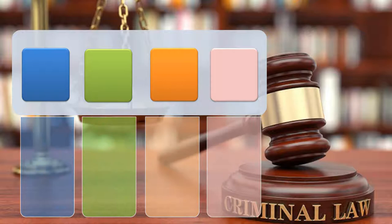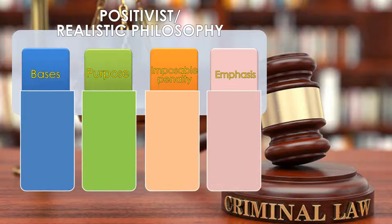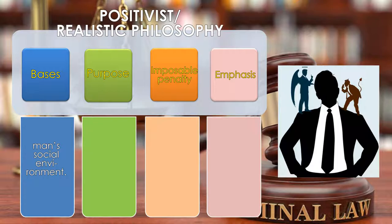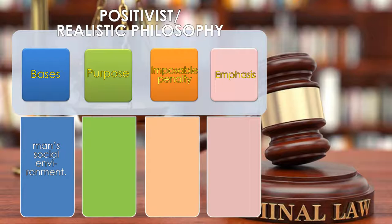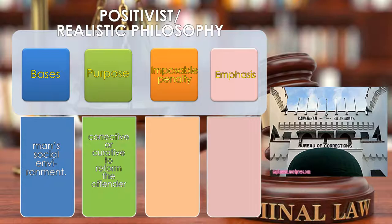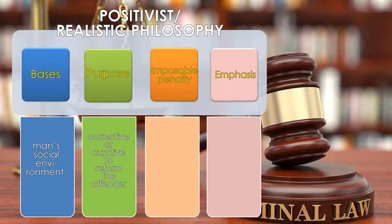Now let us discuss the positivist philosophy. In positivist philosophy, the basis of criminal liability is man's social environment. All men are born inherently good. They only become evil due to association with fellow beings from their social environment. Crimes are social phenomena which cause a person to do wrong, although not of his own volition. The purpose of the penalty is corrective or curative — to reform the offender. Thus, prisons are also called reformatory or correctional institutions. The purpose of the penalty is to cure and to rehabilitate the offender, not to punish him.